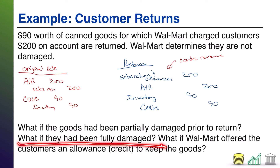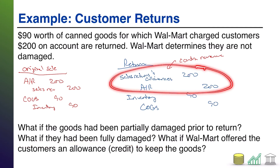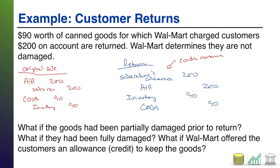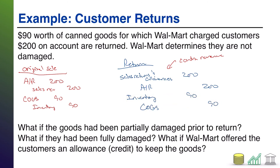The next what-if: what if they've been fully damaged? Again, you've got to give the customer their money back. But if these things are fully damaged, you can't put the inventory back on your books — it's worthless. Also, you can't undo the expense, because that was still a cost to you. You're eating that cost, essentially. So that second half of the return just goes away in the case of a fully damaged situation.